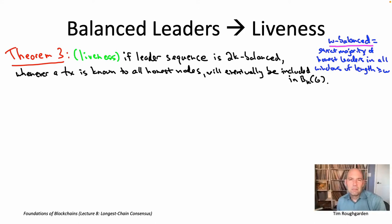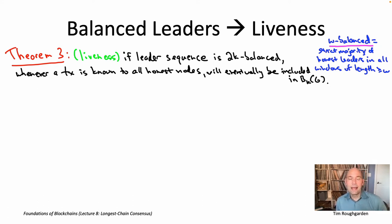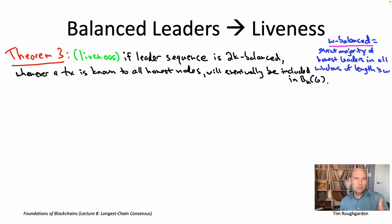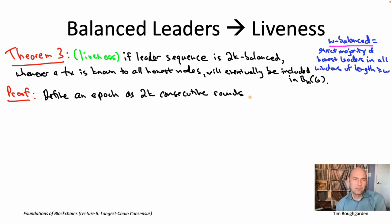This is the same liveness guarantee we stated for the Tenement protocol, where a transaction has to be known to all of the honest nodes. It is a slightly weaker liveness property than what we proved for our SMR protocol based on rotating leaders in Byzantine broadcast, where we only needed a transaction to be known to one honest node. Here we're assuming it's known to all honest nodes, so we need to directly use the hypothesis that the leader sequence is 2K balanced.